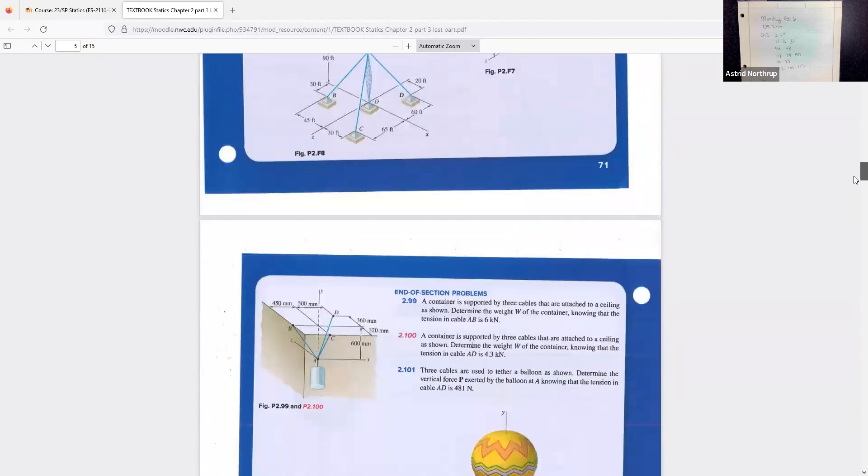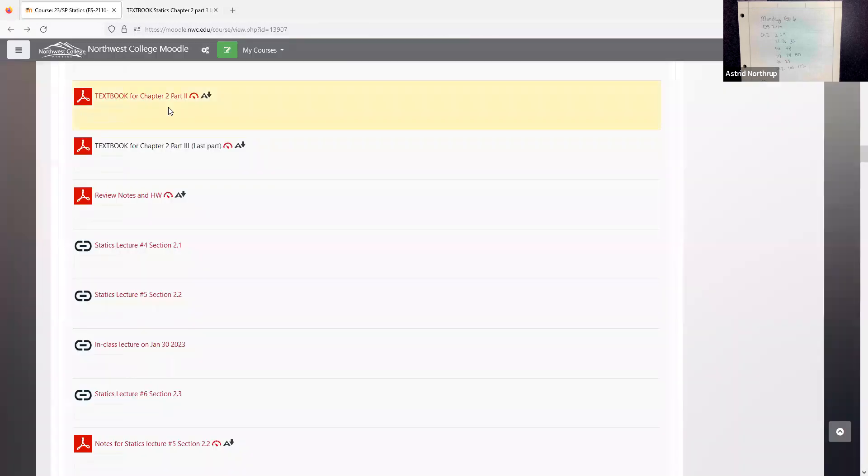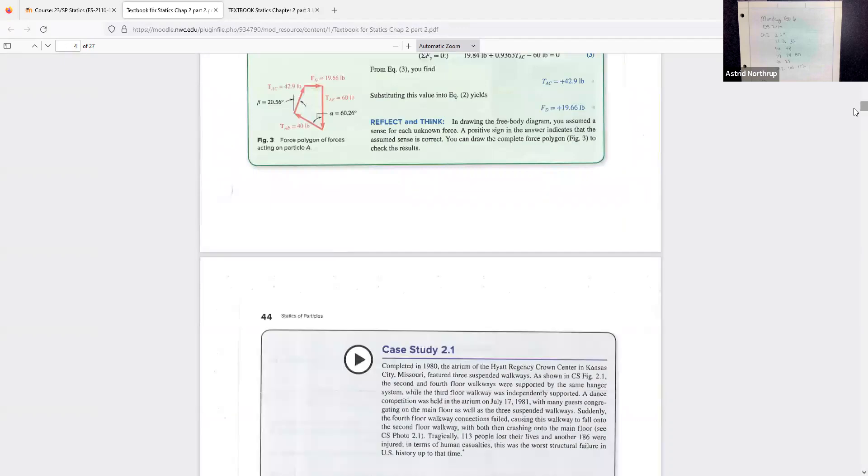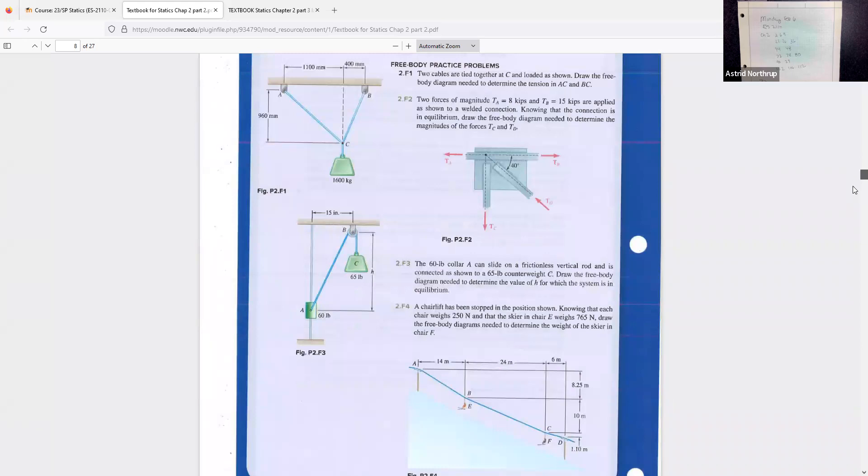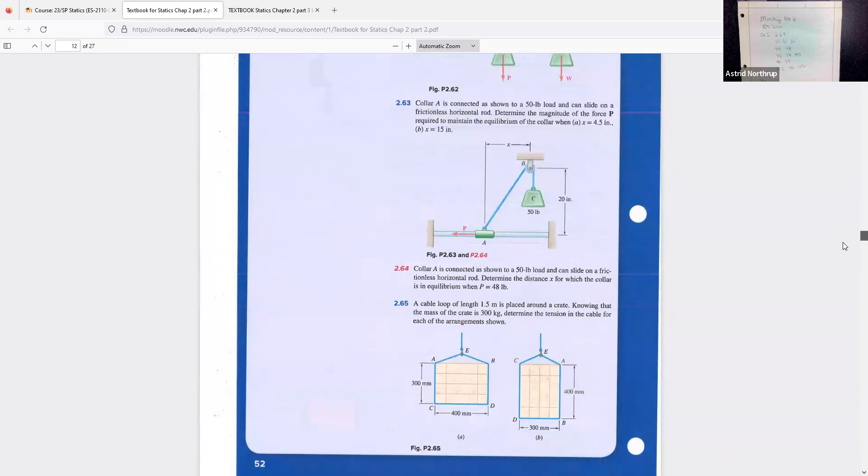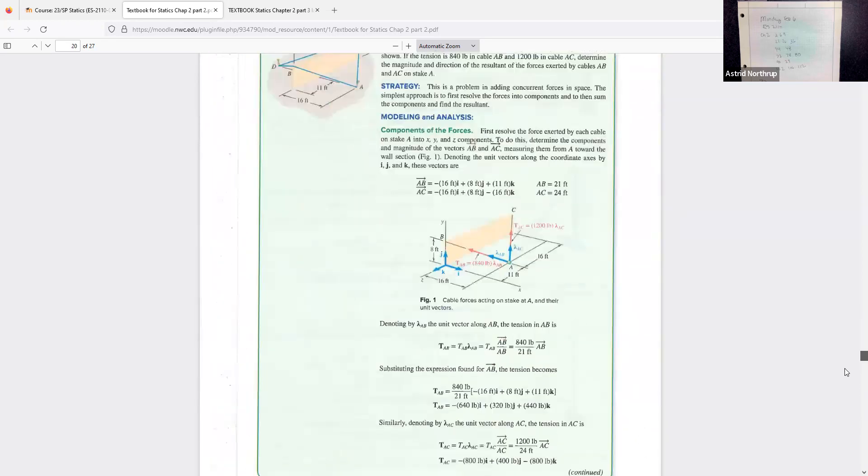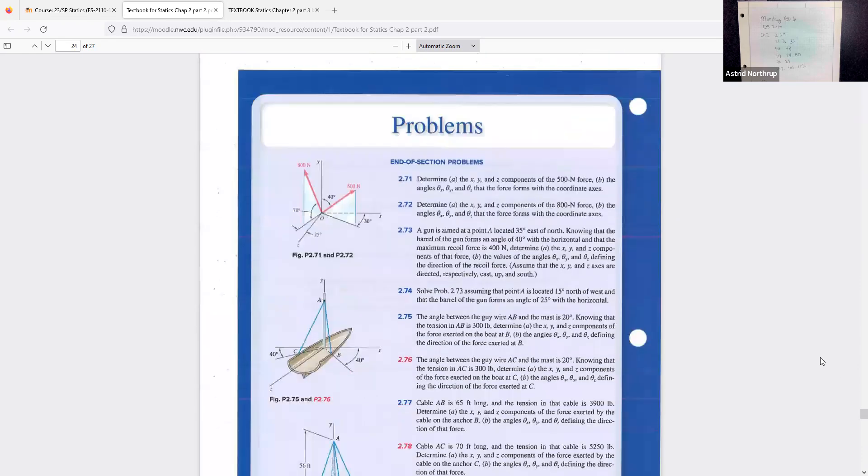So let's take a look at the textbook. Problem 272. We have a three-dimensional vector problem. And I'm going to go ahead and work some of this out for you. First of all, I'm going to keep this problem on my screen while I work the problem out and then I'll put the paper up so that you can see what I'm doing. So first of all, 72 asks us to determine the X, Y, and Z components of the 800 Newton force and then to determine the angles theta X, theta Y, and theta Z.